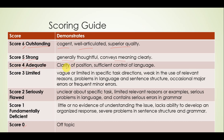A score of 4 means there was clarity in the position you took and good control of language. A score of 3 means your understanding of the specific tasks was limited, the reasons provided were weak, there were problems in language and sentence structure, and there were occasional major or frequent minor errors in spelling and grammar.